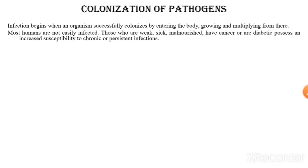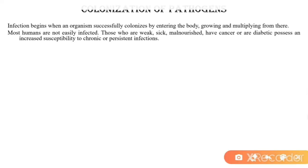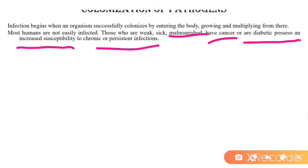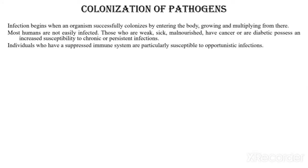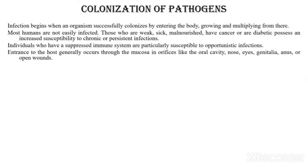Most humans are not easily infected. Those who are very weak, sick, malnourished, or have cancer or diabetes possess an increased susceptibility to chronic or persistent infections. The immune system of each person is different. Individuals who have a suppressed immune system are particularly susceptible to opportunistic infections.